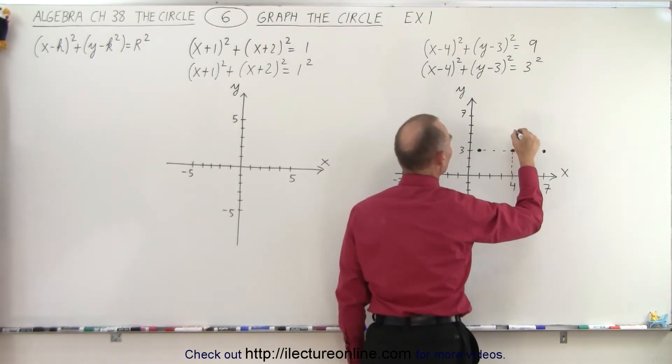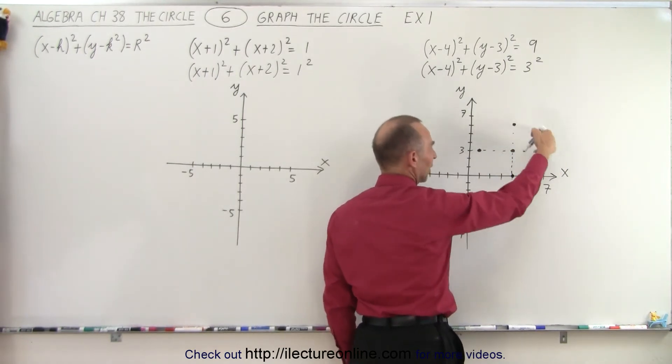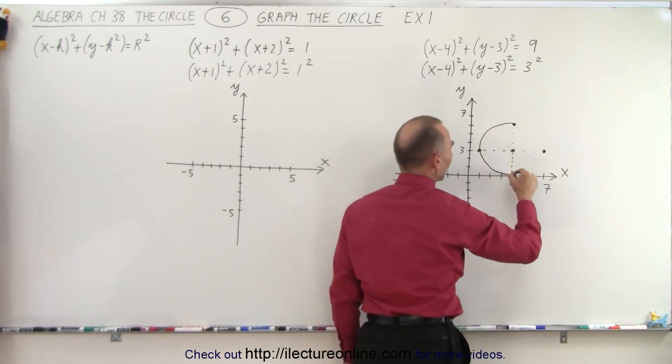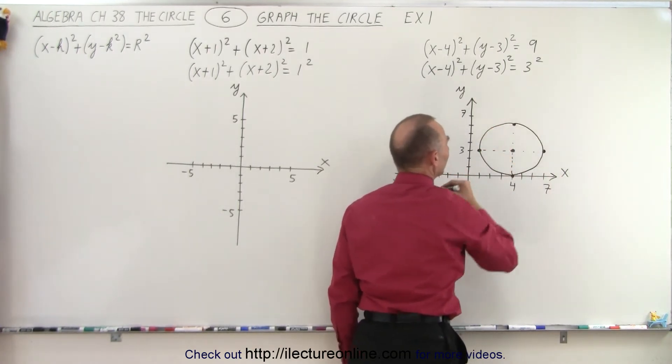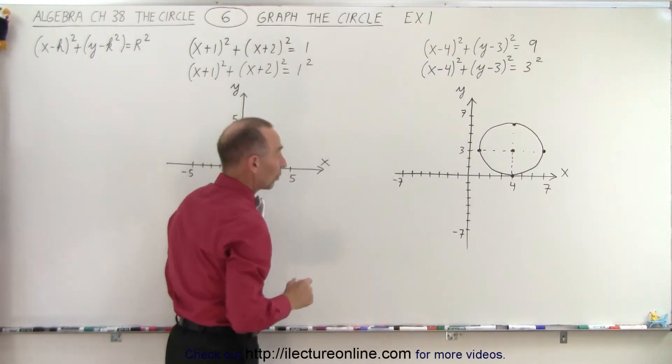Then we move 3 spots up: 1, 2, 3, and 3 spots down: 1, 2, 3. And then you can see that those four points are on the edge of the circle. You can then connect those like this with a nice little circle, and that represents the circle that is equivalent to that particular equation.